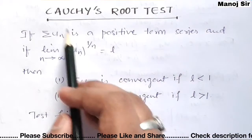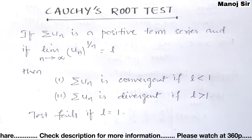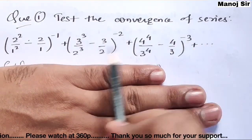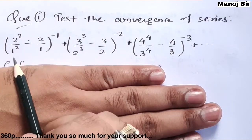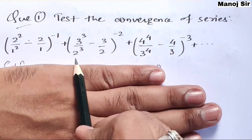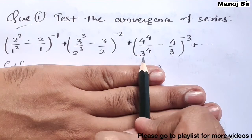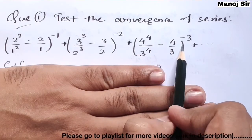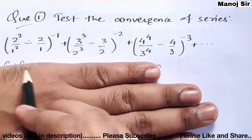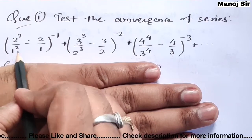Now we will solve one problem. Test the convergence of the series: 2²/1² − 2/1^(−1) + 3³/2³ − 3/2^(−2) + 4⁴/3⁴ − 4/3^(−3) + ...